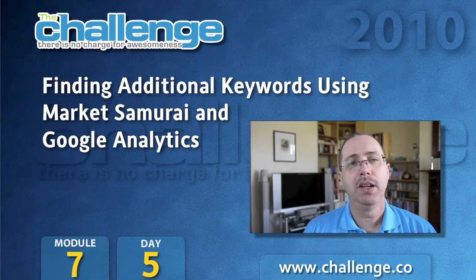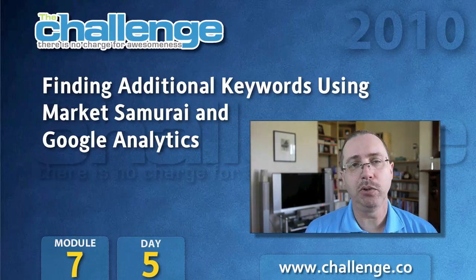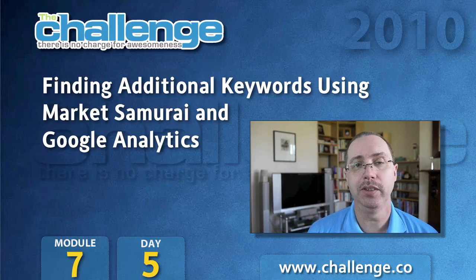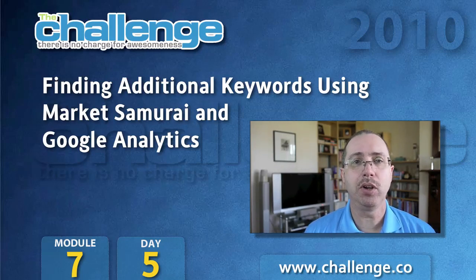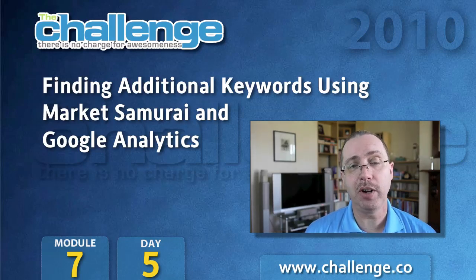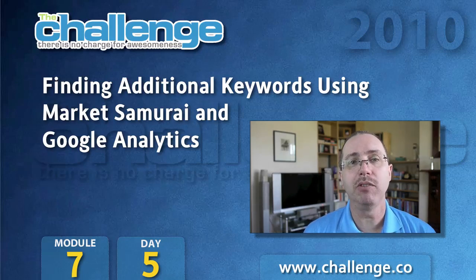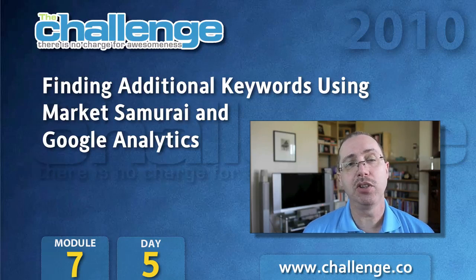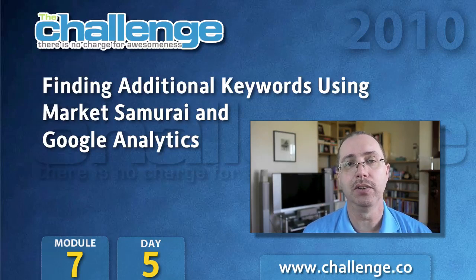Hi everybody, it's Guru Bob and welcome to day 5 of module 7 for the challenge in 2010. In today's video I'm going to be talking about an action that you can take once you decide to go forward in your micro niche. I'm going to show you how to use Market Samurai and your Google Analytics account to find those keywords. So let's jump straight in to Market Samurai.